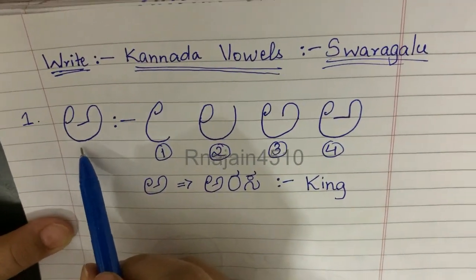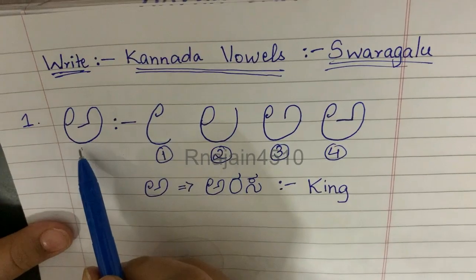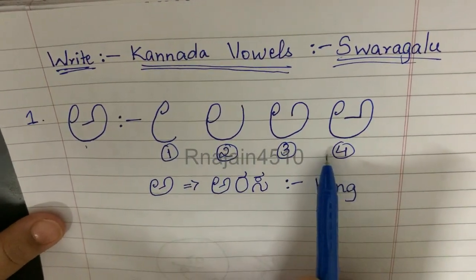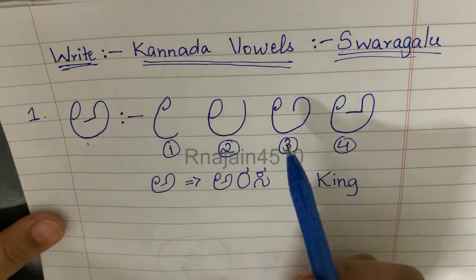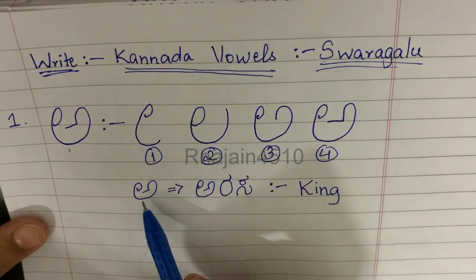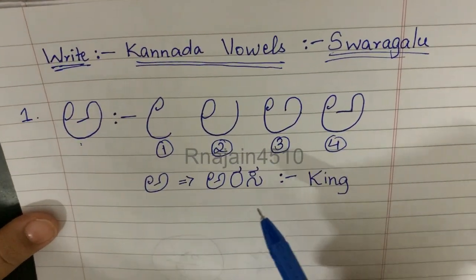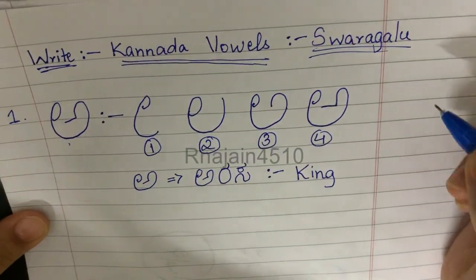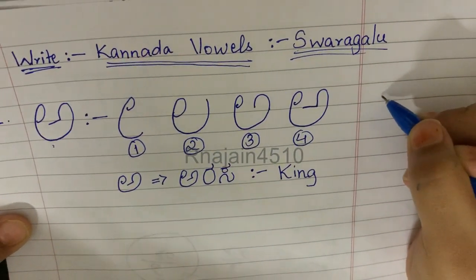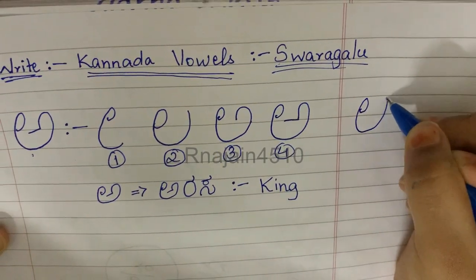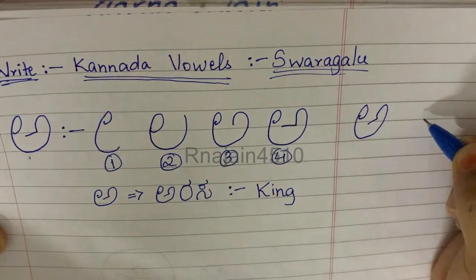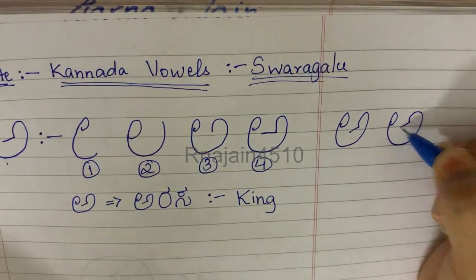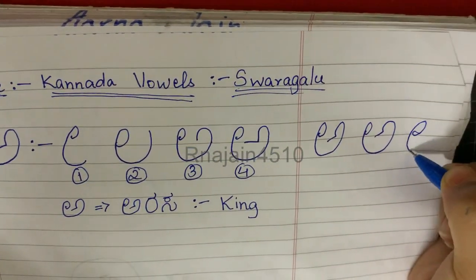So, Kannada vowels — the first letter in Kannada is O. There are four steps in this Kannada vowel. O for Arasa, known as king. Now we'll practice how to write O.